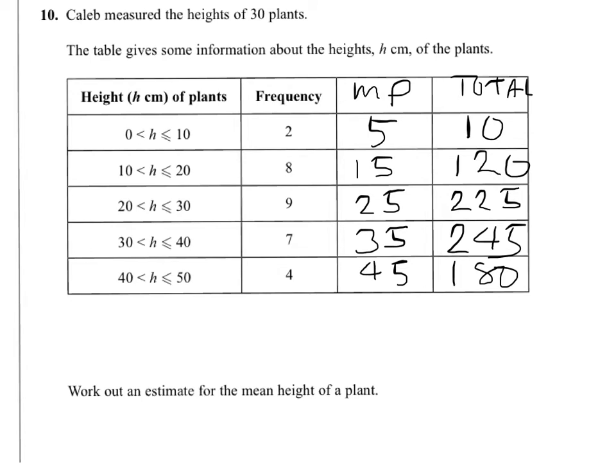Then you need to find the total frequency, which is actually given to you at the start, so that will be 30. And the total of all the heights of the plants, your estimate. So we need to add up 10, 120, 225, 245, and 180, which comes to 780.